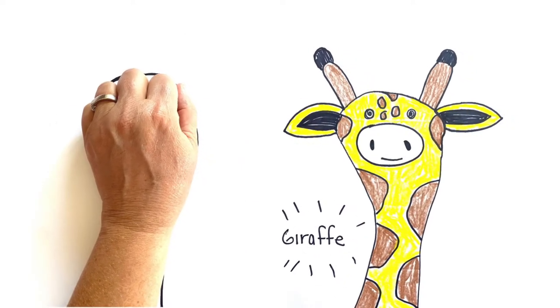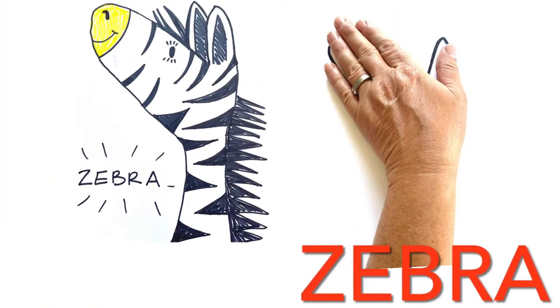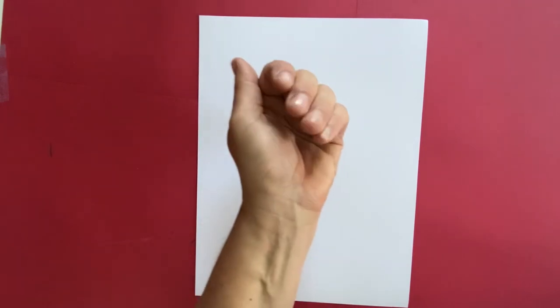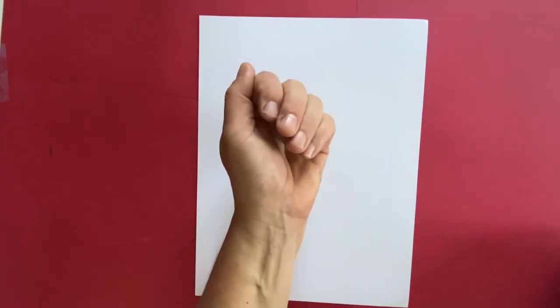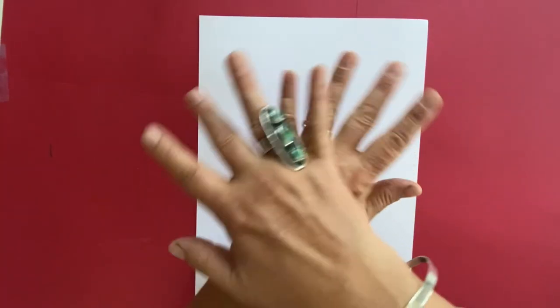Alright, you're going to need a piece of paper and pencil. The first one we're going to do is the zebra. Get your piece of paper and I want it to be up-and-down portrait style. We've talked about that before and you're going to get your pencil and your hand.